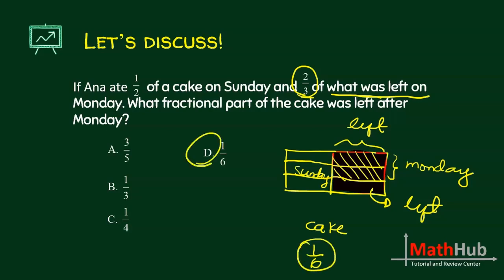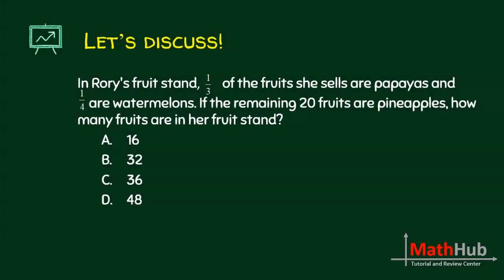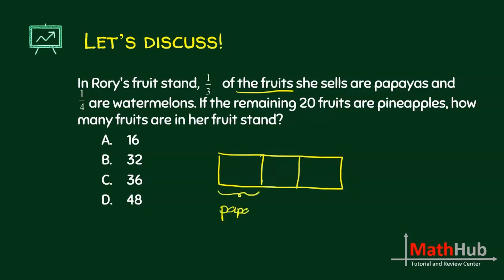Next: In Rory's fruit stand, one third of the fruits she sells are papayas and one fourth are watermelons. If the remaining 20 fruits are pineapples, how many fruits are in her fruit stand? What do we represent by the box? The phrase after the 'of' phrase — so the box represents all the fruits. One third of her fruits are papayas, so that section is already shaded.